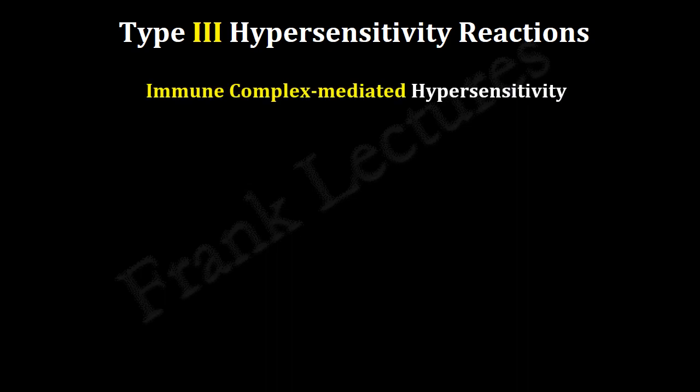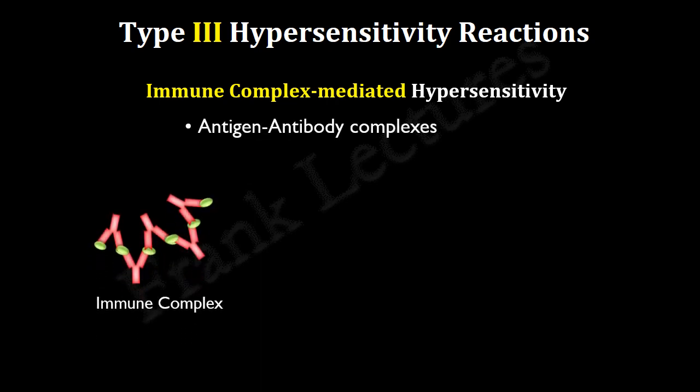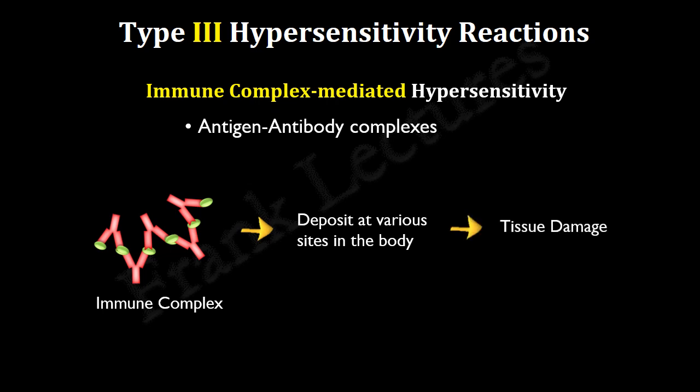Immune complex simply means antigen-antibody complex. It is formed by binding of soluble antigens and antibodies. In type 3 hypersensitivity, immune complexes are formed in the serum of a person. These immune complexes get deposited in the body at various sites, and damage is caused due to complement-mediated reactions.